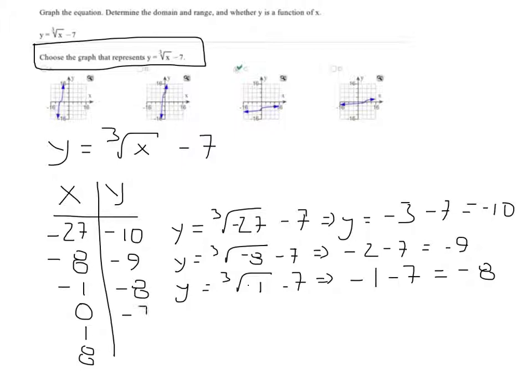Here, if we plug in a 0, I get a negative 7 back out. Plug in a 1. Cubic root of 1 is 1. 1 minus 7 is negative 6.